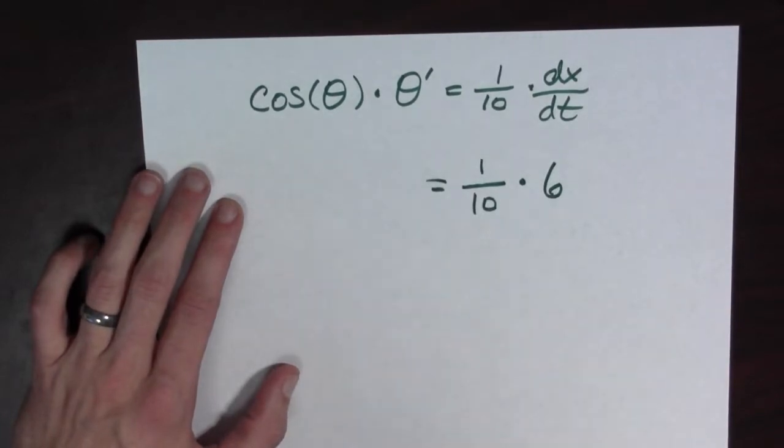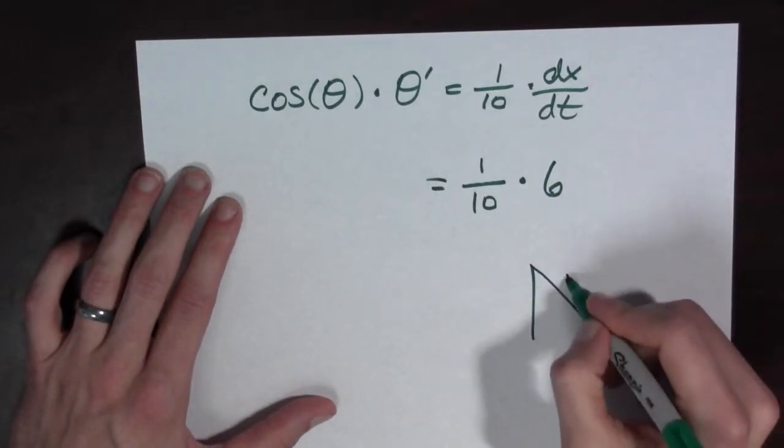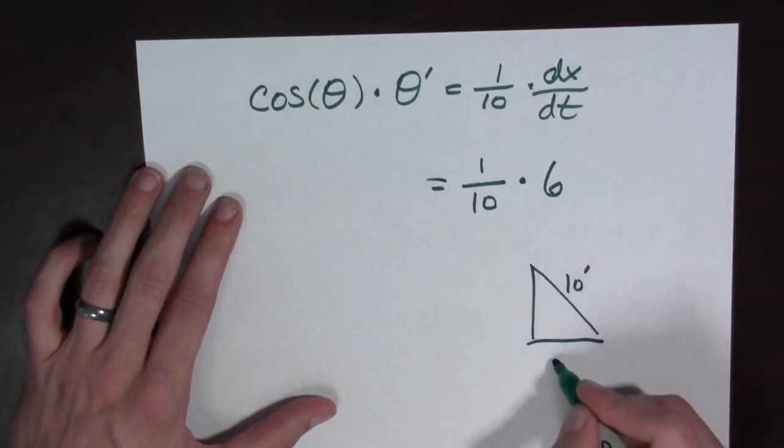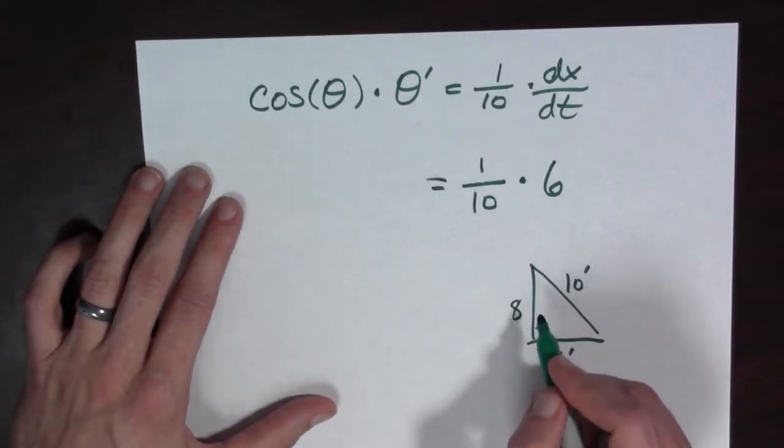And if it's six feet per second, then we know that our triangle here that we drew earlier, where we had ten feet of rope, it's going to be six feet here. Well, look, this is a right triangle. This is ten, this is six. Then this has to be eight.